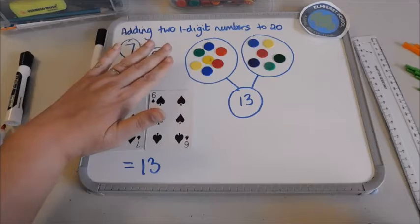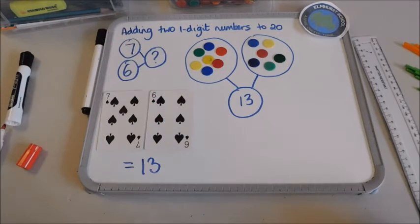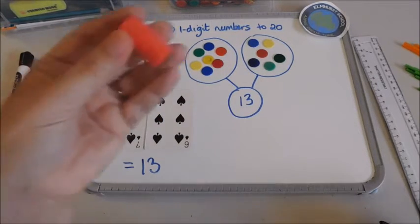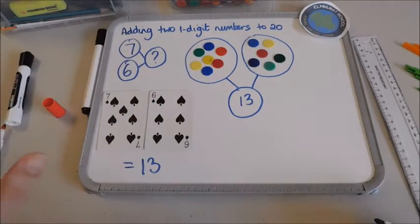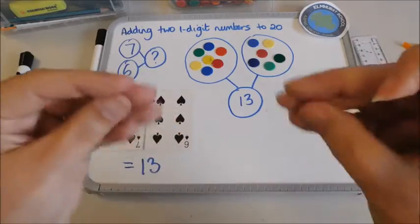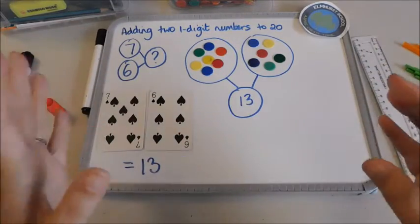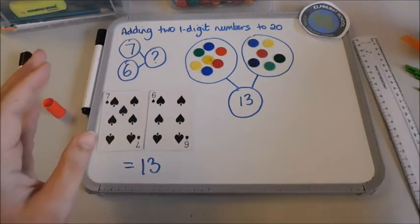Now you can use absolutely anything if you don't have counters at home. You can use paper clips, dried pasta, pen lids, bits of lego. If you've got play-doh, break it up into little balls. You can use play-doh, absolutely anything.